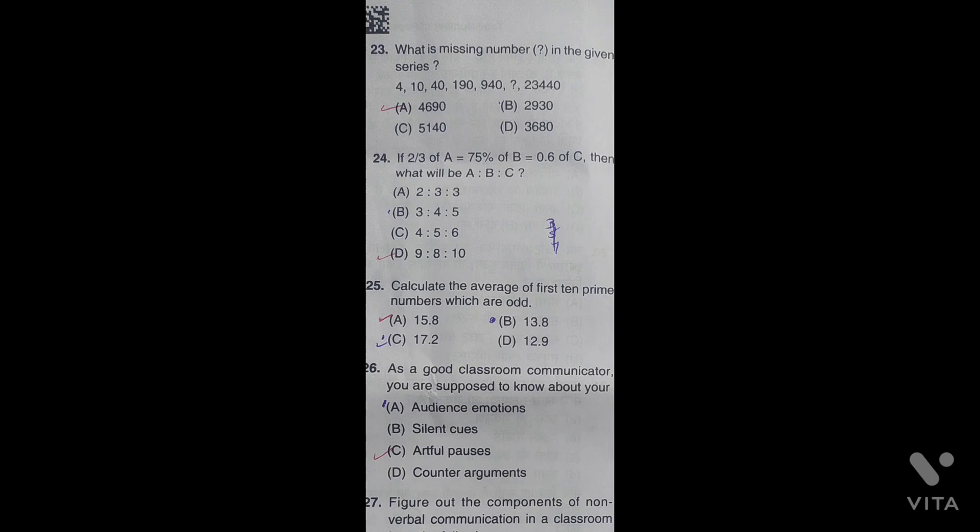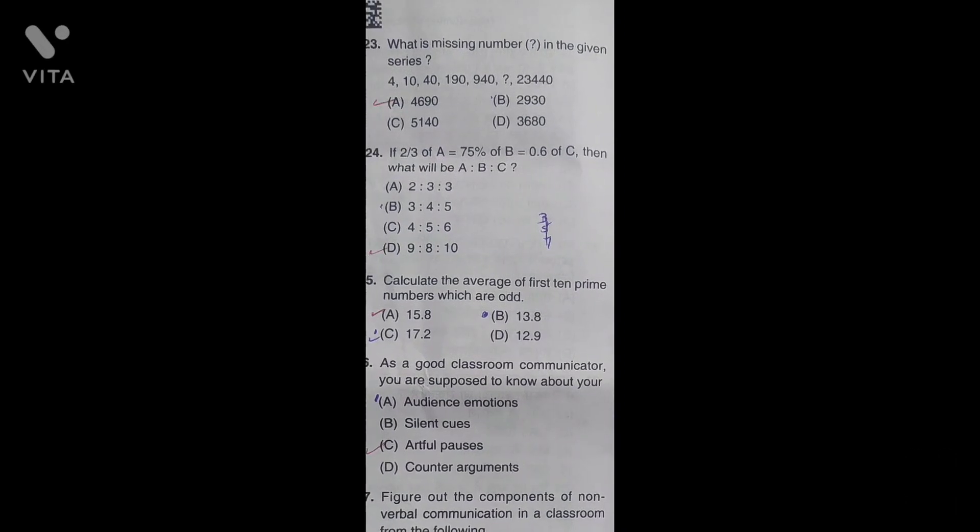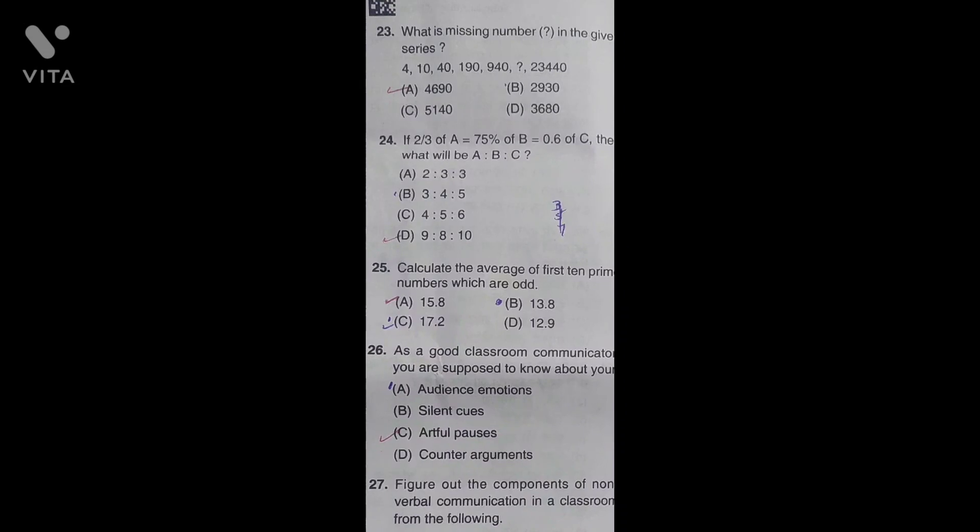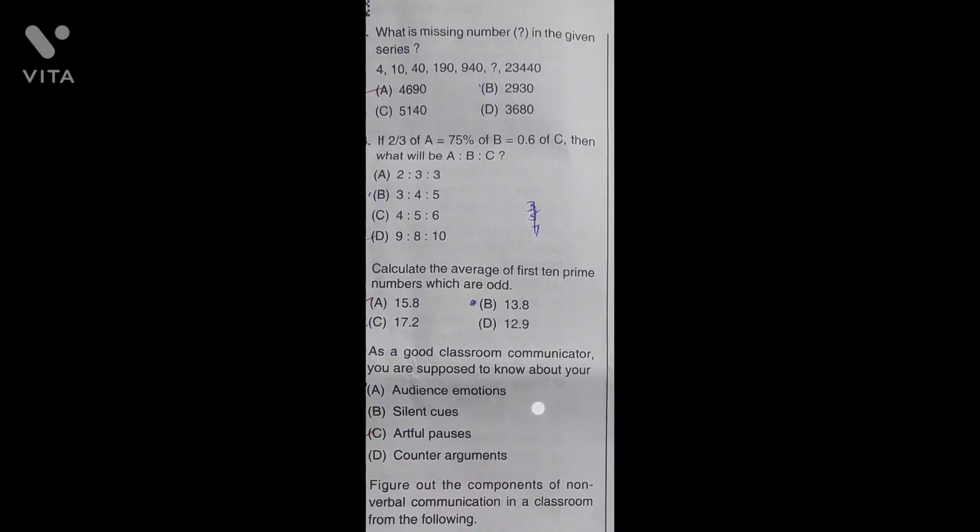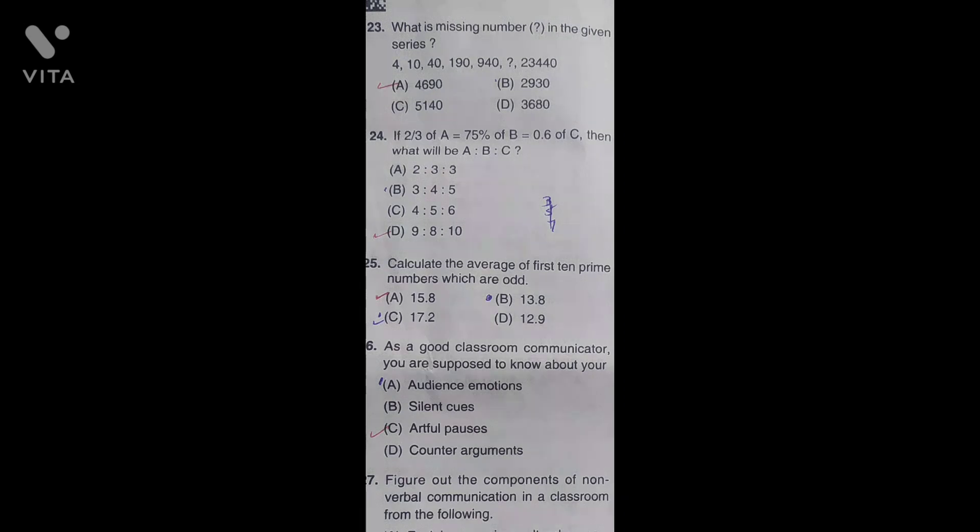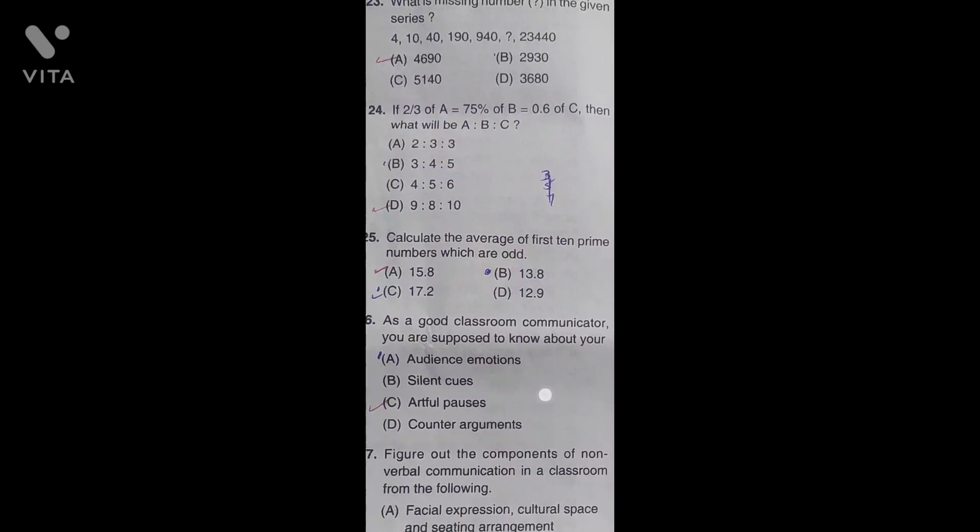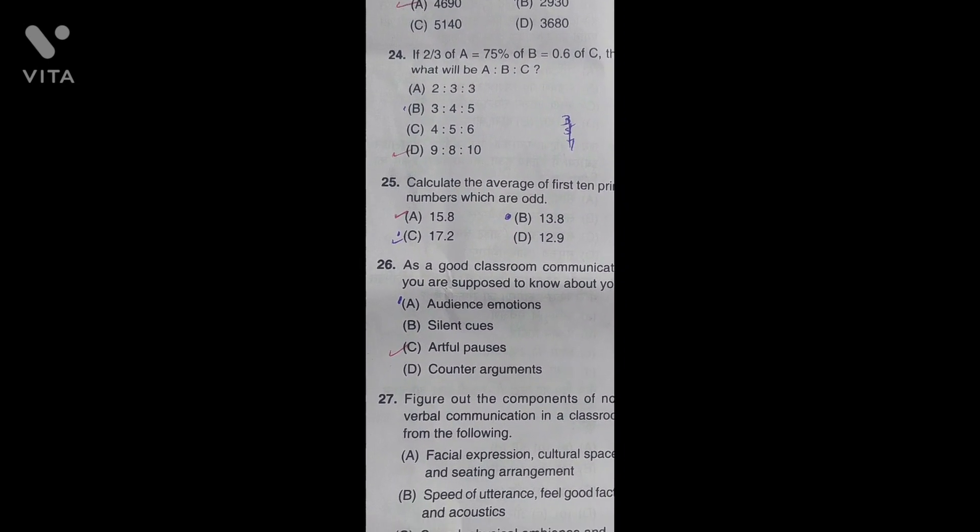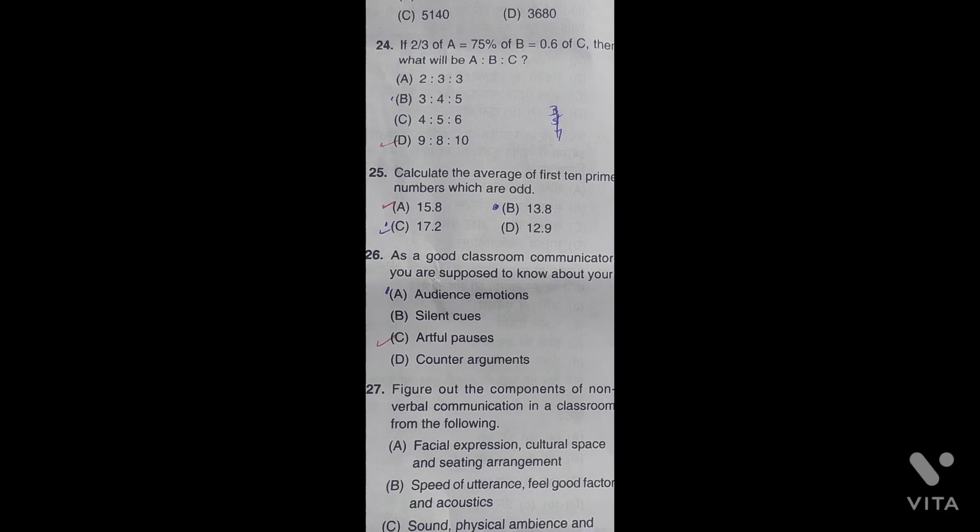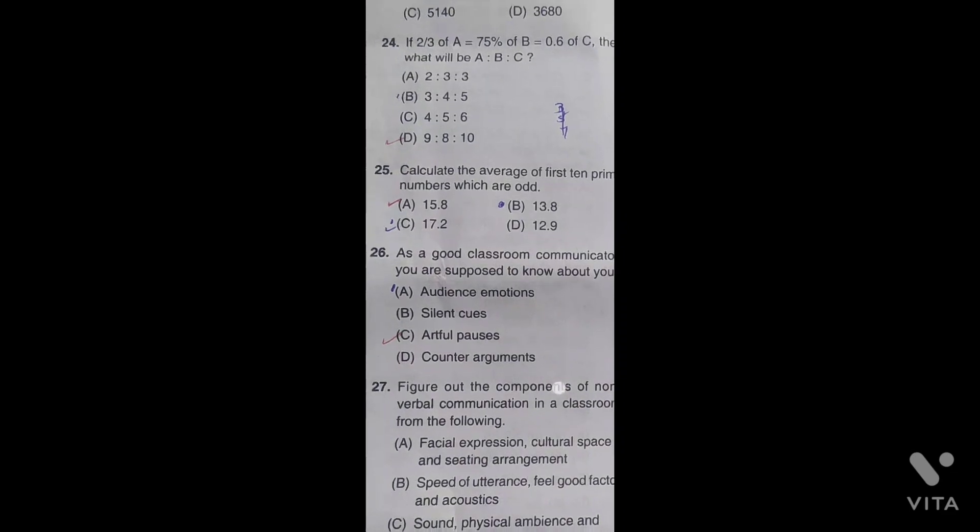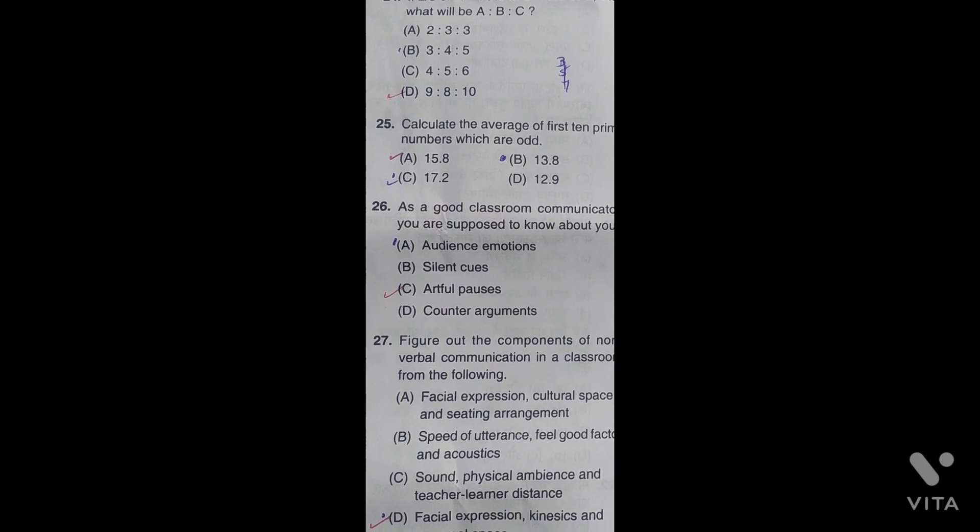What is the missing number in the given series? This is also a reasoning question. The correct answer is 4, 6, 9, 0. Another one: if 2 divided by 4A is called 0.7, B is called 0.6C, then what is A ratio B ratio C? The correct answer is D, that is 9 ratio 8 ratio 10.